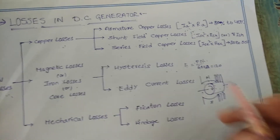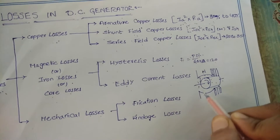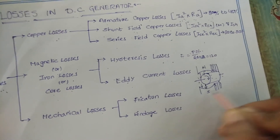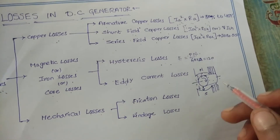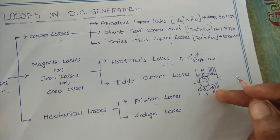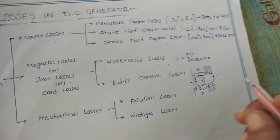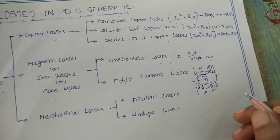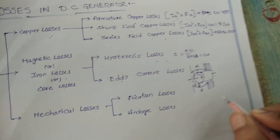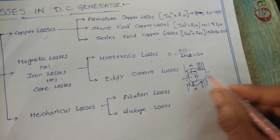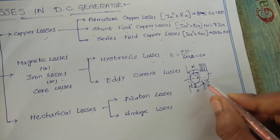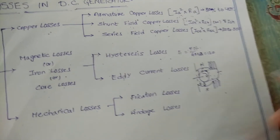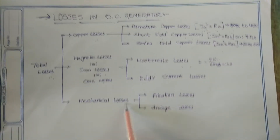When the armature rotates, it also cuts the magnetic flux lines, causing an EMF to be induced in the body of the core. Even though this EMF is small, it drives a large current through the body of the core due to the small resistance of the core. This current is called eddy current.